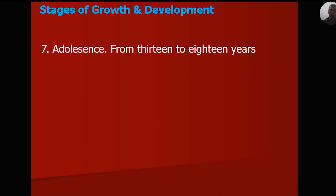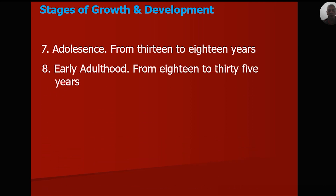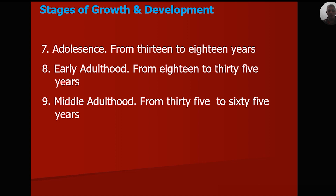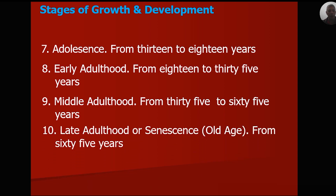Adolescence is from 13 to 18 years. Early adulthood is from 18 to 35 years. Middle adulthood is from 35 to 65 years. And the last one is late adulthood, also called old age, which is from 65 years onwards.